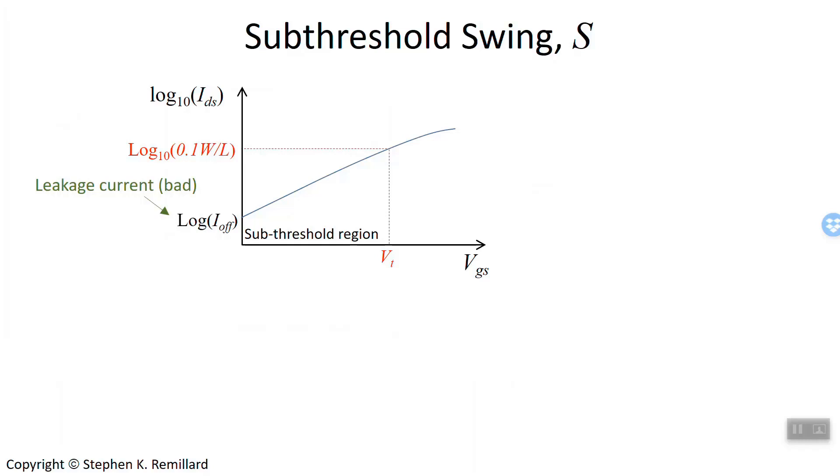Literally the subthreshold swing is 1 over the slope of the log of the drain source current versus the gate source voltage shown here. I might mention in the previous lecture, I had this graph where somehow this curve got turned upside down and it was concave up, which actually makes no sense. It's correct now. And the threshold voltage, remember, is defined as the place where the drain source current is 0.1 microamp times the width of the channel divided by the length of the channel.